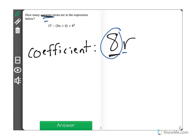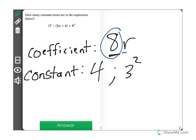However, here we're looking for the constant terms. Constant terms are terms that don't change. For instance, 4, when you have that in the expression, it will always be 4. 3 squared will always be a value of 9.